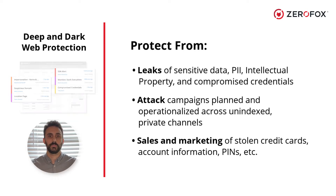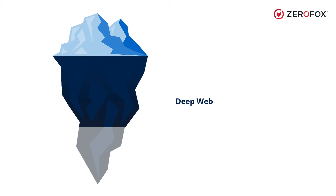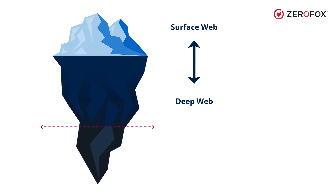The deep web refers to the portion of online sites and content that cannot be indexed by traditional search engines like the surface web can. The dark web is a subset of the deep web and refers to content that can only be accessed through the use of specific software configurations or authorizations.